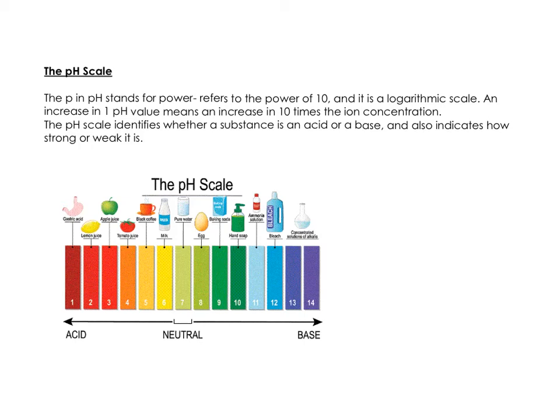The pH scale. The P in pH stands for power, and this refers to the power of 10. It's a logarithmic scale, so an increase in one pH value means an increase in 10 times the ion concentration. The pH scale identifies whether a substance is an acid or a base, and also indicates how strong or weak that acid or base is.